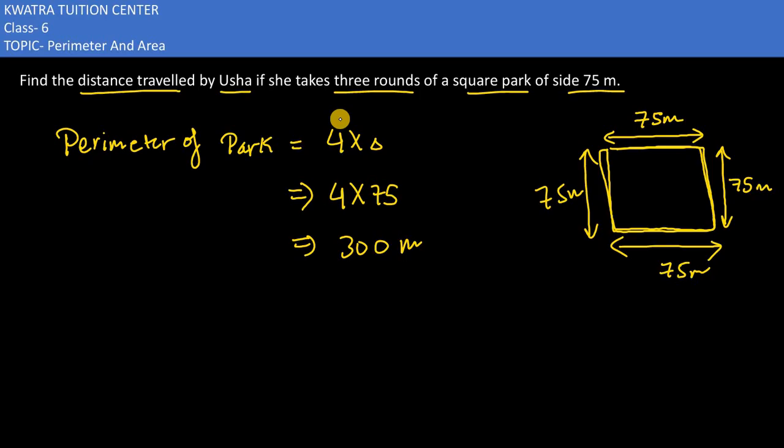If we want to find the distance traveled for three rounds, that would be equivalent to 300 × 3. If you multiply 300 by 3, what will it give us? It would give you 900 meters. The total distance traveled by Usha would be 900 meters for three rounds.